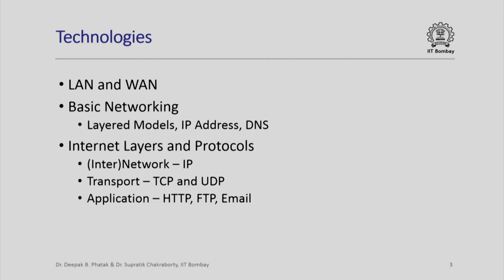To recapitulate: at the base you have the network layer; in the middle you have the transport layer which handles communication between two computers; and at the top is the application layer, which works on every computer and through which you access the network. Some of the applications at this layer are HTTP or hypertext transfer protocol, FTP or file transfer protocol, and email, which was recognized as a separate application protocol.